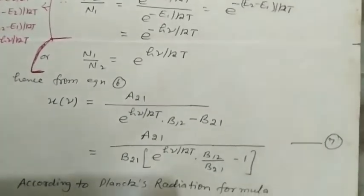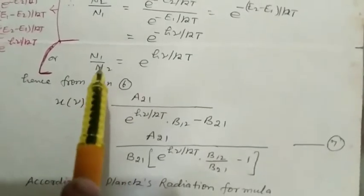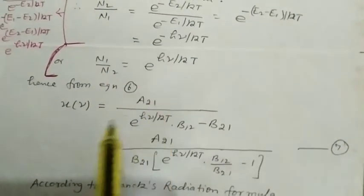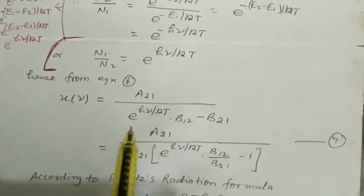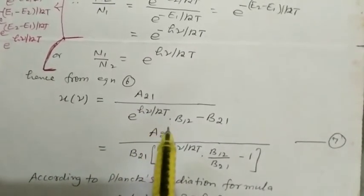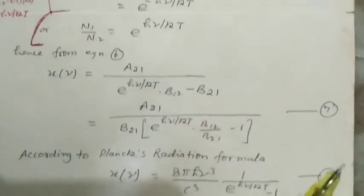Hence, from equation number 6, putting the value of N1/N2 in equation number 6, we get U(ν) = A21/[e^(hν/kT)·B12 - B21].